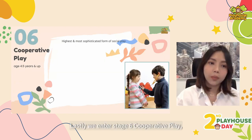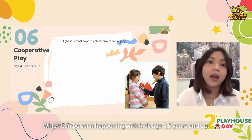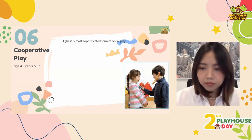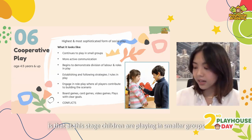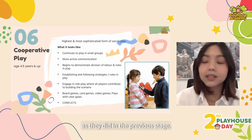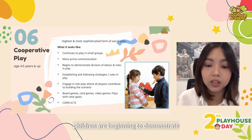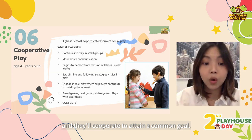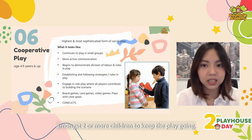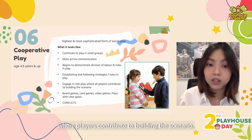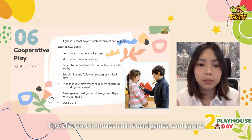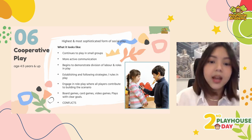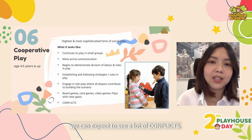Lastly, we enter stage six — cooperative play — which can be seen happening with kids age four and a half years and up. This is the highest and most sophisticated form of play. At this stage, children are playing in smaller groups as they did in the previous stage. But now children are beginning to demonstrate a division of labor and roles. They're establishing rules of play and cooperating to attain a common goal, which requires a lot of communication amongst two or more people to keep the play going. They're also engaging in a lot of role play where players contribute to building the scenario. They're also starting to be interested in board games, card games, and video games — games and plays that have a clear goal and rule. And of course, during cooperative play, we can expect to see a lot of conflict.